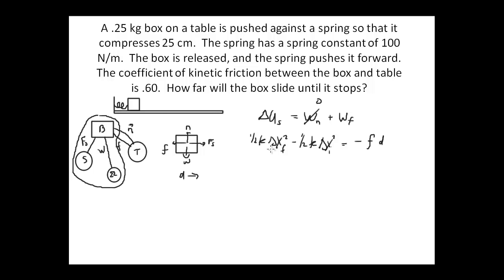We know that at the end of the problem the box is not touching the spring, so this whole thing becomes zero. So we have negative one half times 100 times 0.25 squared is equal to negative...